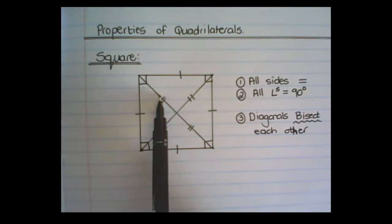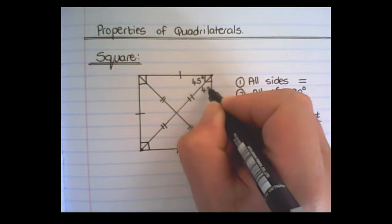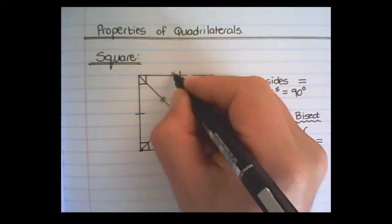With the diagonals cutting each other in half, the corners are also bisected. And lastly, opposite lines of a square are parallel to each other.